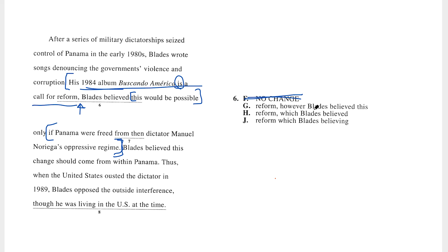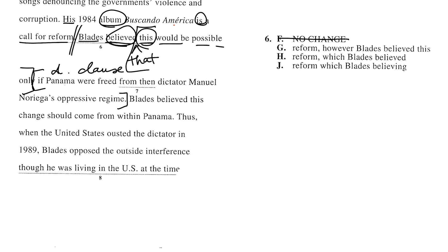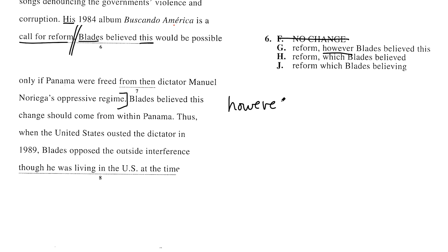A lot of my students actually pick G. They hear that F is missing some sort of glue or transition, so they read G and they like it. G reads: his 1984 album Buscando America is a call for reform, however, Blades believed this would be possible only if Panama were freed from then-dictator. It sounds beautiful — but however is not glue in the way you think it is. However is actually an adverb, and you cannot use it to glue together two sentences with just a comma.